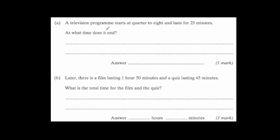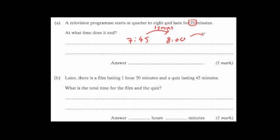A television program starts at quarter to eight, which is 7:45, and it lasts for 25 minutes. To get to the next hour — eight o'clock — we add 15 minutes. Another 10 minutes after that would be five to, and another five minutes would be eight o'clock. So it takes 15 minutes to get to the next hour, and altogether the program lasts 25 minutes, meaning there are another 10 minutes to go.